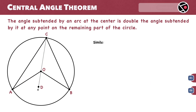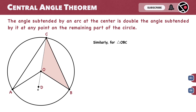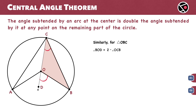Similarly, for triangle OBC, angle BOD equals 2 times angle OCB. This is equation number 3.